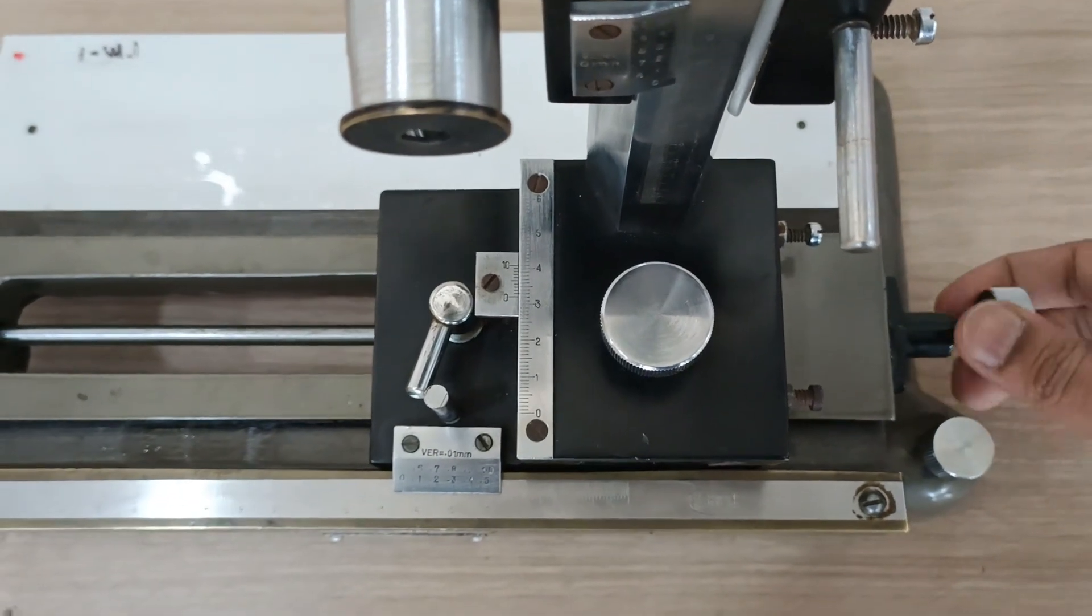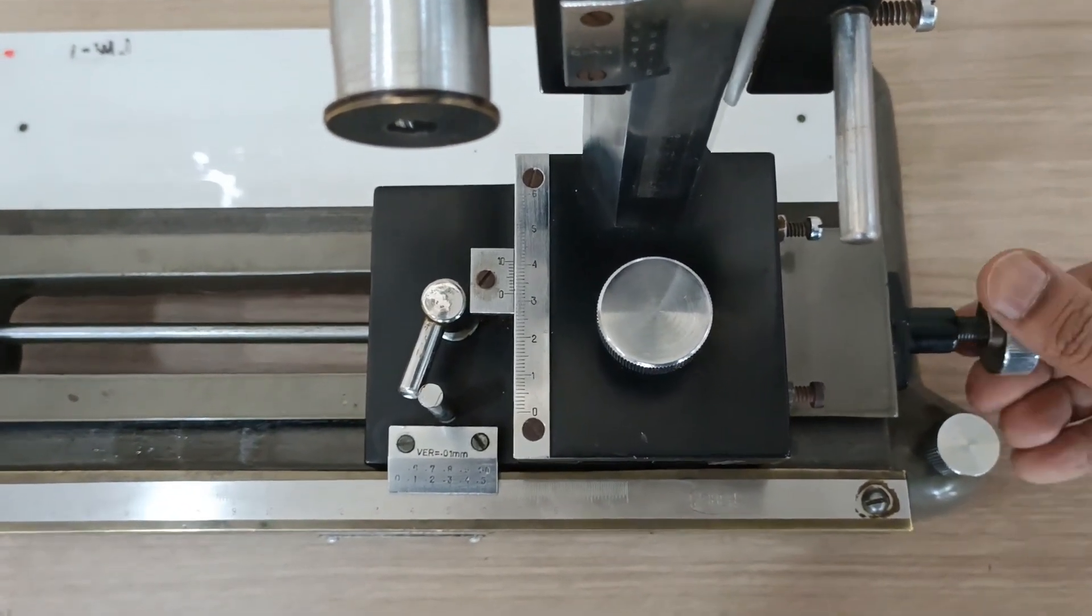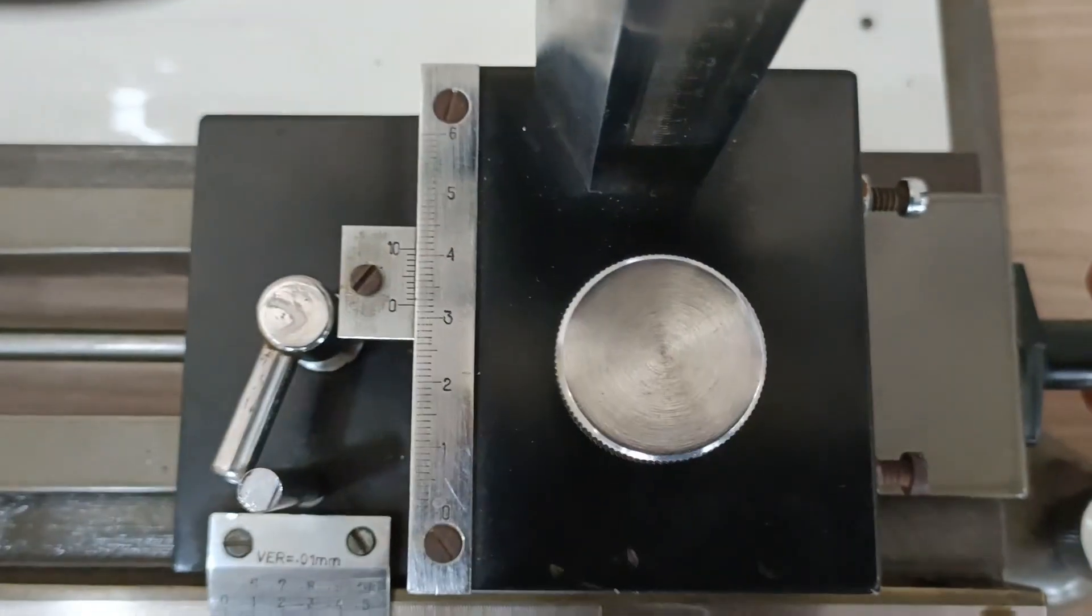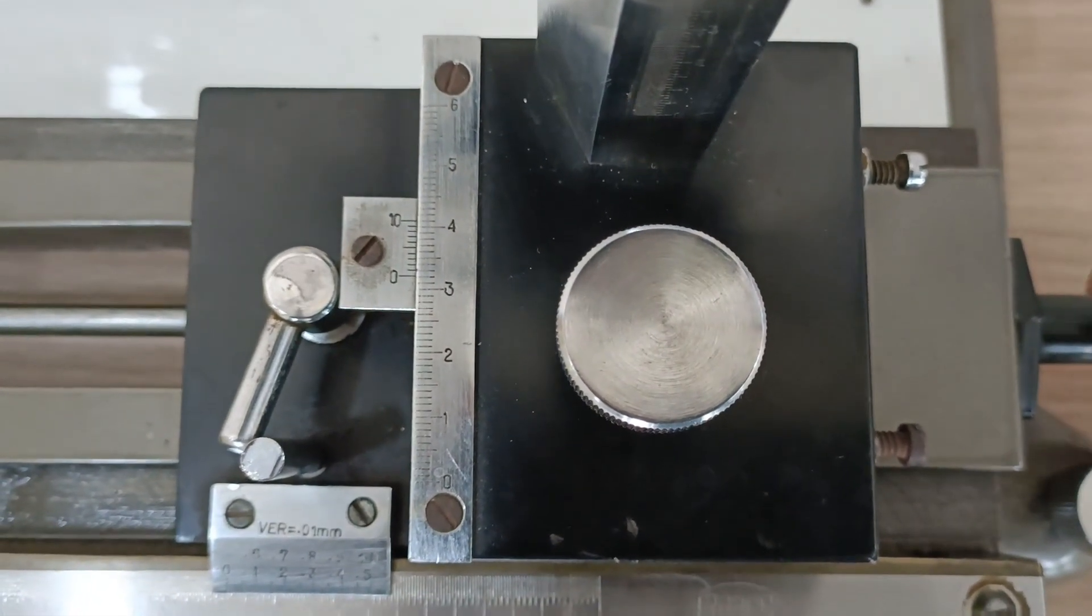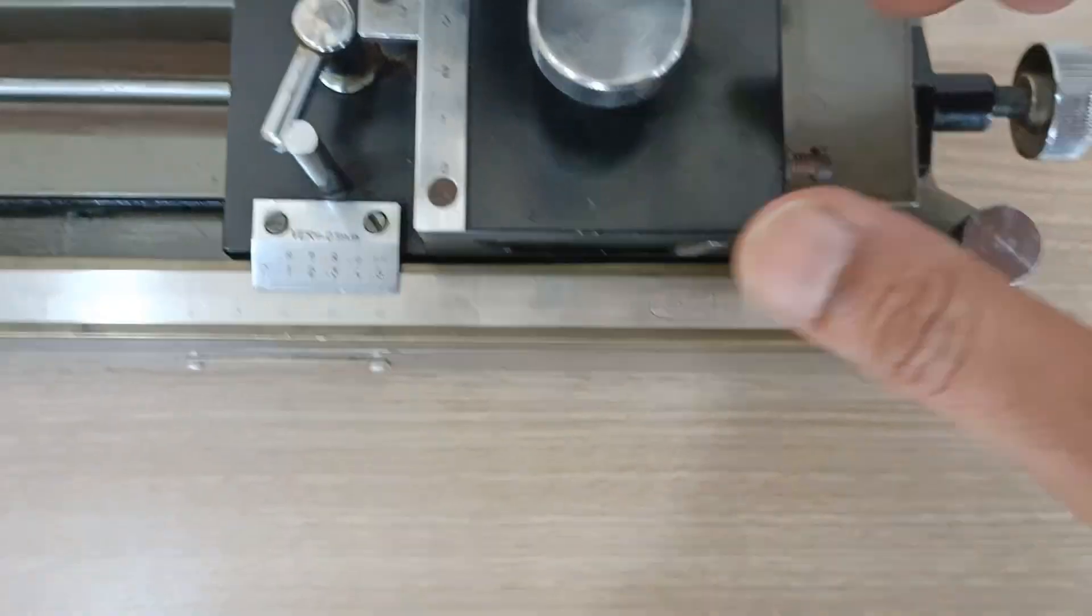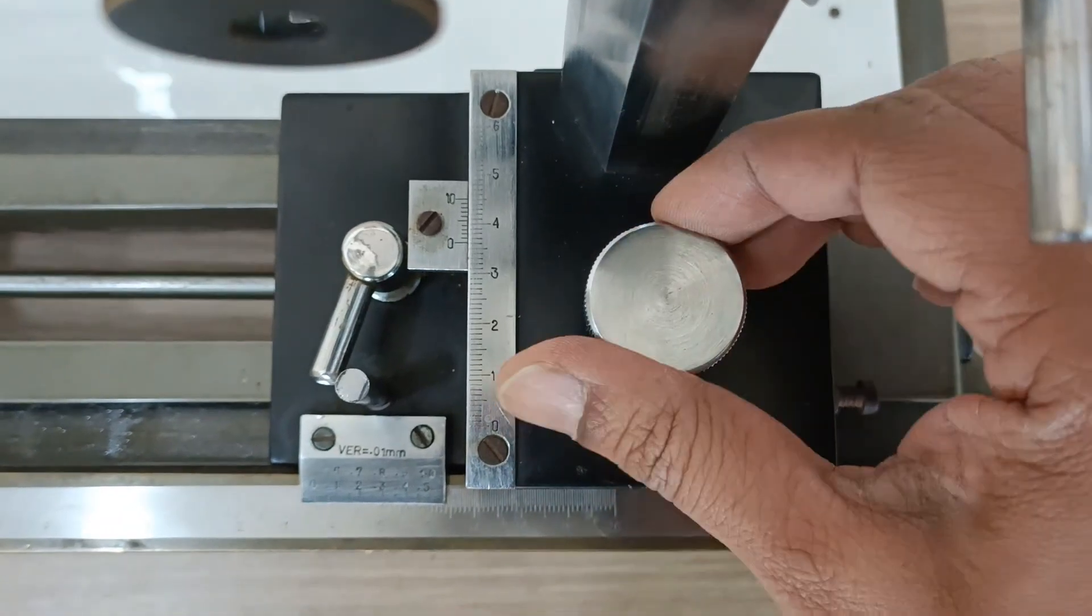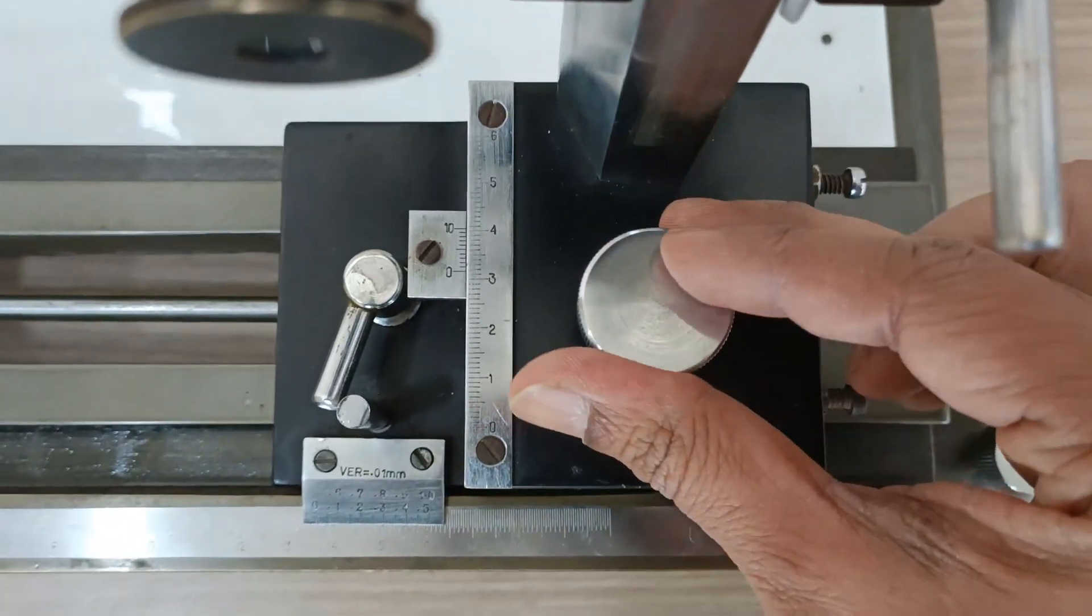On turning this knob the microscope moves along horizontal x-axis. On turning this knob the microscope moves along vertical y-axis.